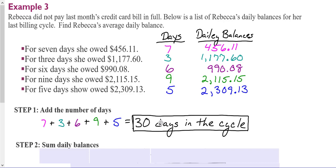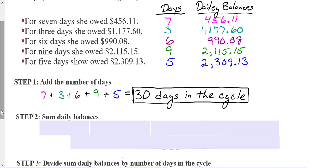Because some months have 31 days, some months have 30 days, it creates a difference in the number of days in the billing cycle. So the next step would be to sum up the daily balances.